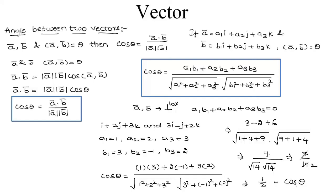Since cos(π/3) = 1/2, we get the value of theta as π/3. So this was the basic introduction on angle between two vectors. Hope you understood the concept. In our next videos we are going to solve a few more examples on the same concept.